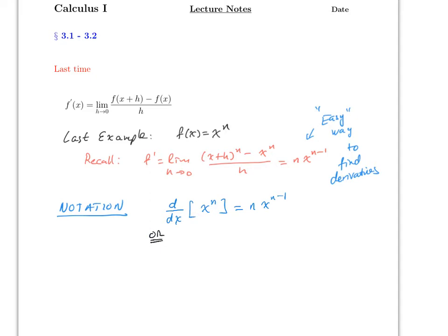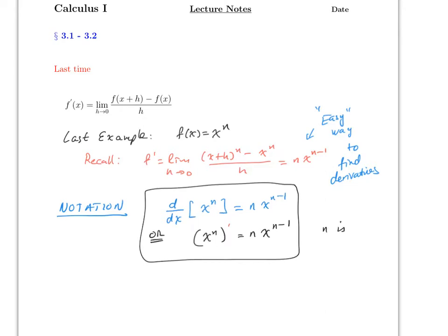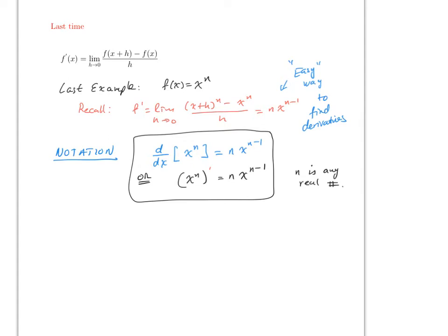The older notation was: you have x to the n and then we do the prime — that means the derivative — and this will also give you n times x to the n minus one. This formula is going to be true for any power function where n is pretty much a real number — so positive or negative, for now let's just say n is a real number.